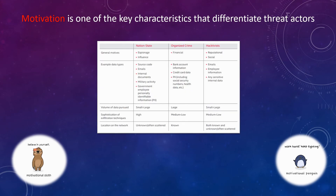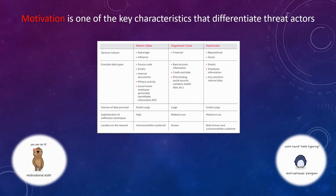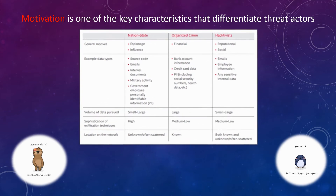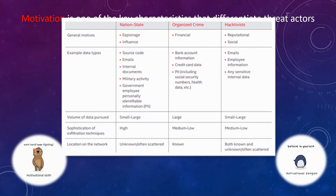Motivation is one of the most important key characteristics that differentiates threat actors. State-based entities generally try to gain strategic advantage and often target intellectual properties. The financial goal of an organized criminal makes it easy to understand its motivation — it tends to focus on large credit card and banking transactions or personally identifiable information. Insider threats are probably the hardest to stop, as internal data can affect the reputation of the organization.